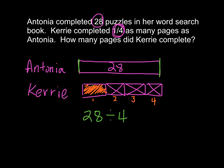If I divide 28 by four, I will find the amount of one section. Twenty-eight divided by four equals seven, because seven times four equals 28. So this one bar — one part — is worth seven. Carrie completed seven puzzles in her word search book.